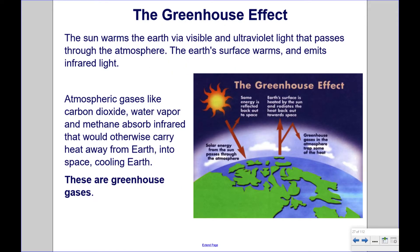The sun warms the Earth via visible and ultraviolet light that passes through the atmosphere. The Earth's surface warms and emits infrared light. Atmospheric gases like carbon dioxide, water vapor, and methane absorb infrared that would otherwise carry heat away from Earth into space, cooling Earth. These are greenhouse gases.